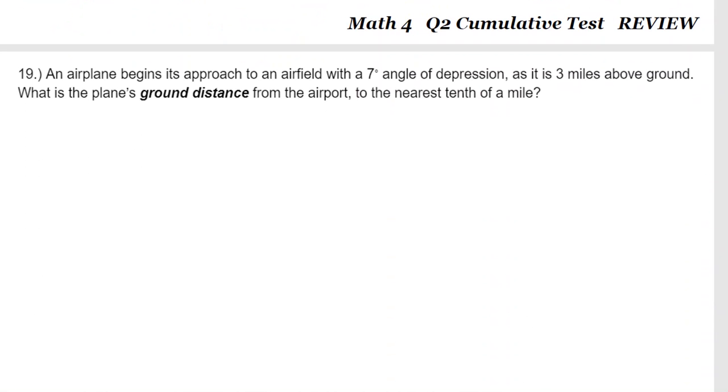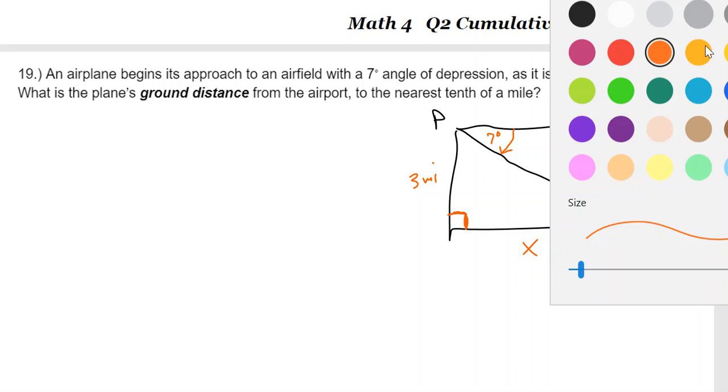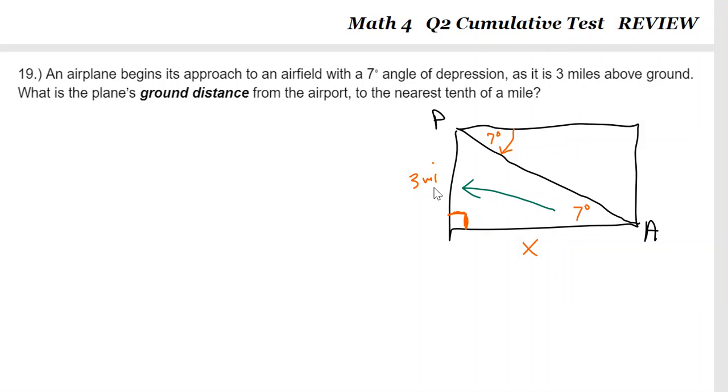All right. Now, anytime you have a word problem with an angle of depression, it is my recommendation that you draw a rectangle with a diagonal. If you have your plane and you have the airport, the plane is coming in for a landing, and it is using a seven degree angle of depression. Well, we did this last time. That means that these are alternate interiors and this guy is seven degrees also. Now, it is three miles, the plane is three miles above the ground. And so they want to know what is the ground distance from, you know, if somebody fell out of the plane right there, how far would they have to walk to the airport? And of course, that is going to be happening at a right angle.